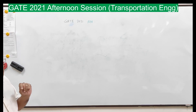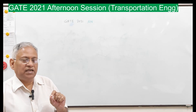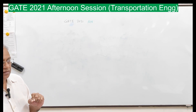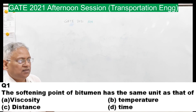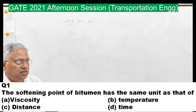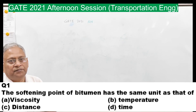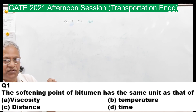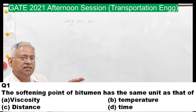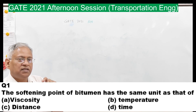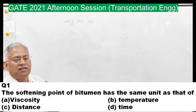The first question is simple and straightforward: the softening point of bitumen has the same unit as that of. Four options are given: viscosity, temperature, distance, and time. By definition, softening point is the temperature at which the bitumen attains a particular softening, and therefore temperature is the correct answer.